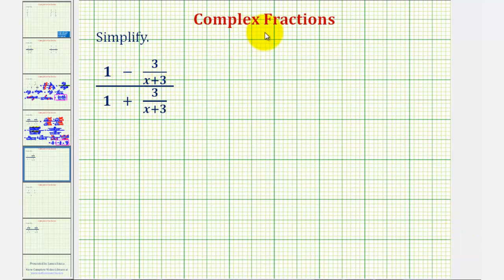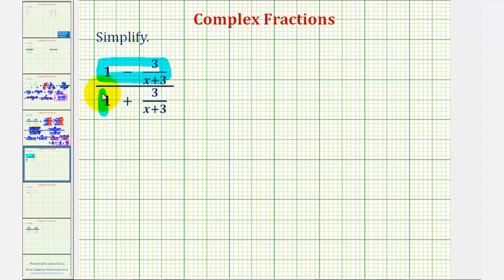We want to simplify the given complex fraction. To do this, we'll first find the difference on top, then find the sum on the bottom, and then once we do this, because this fraction bar represents division, we'll write the complex fraction as a division problem.